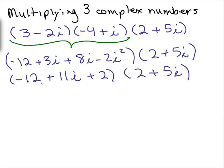And I still need to combine my real parts, the negative 12 plus 2. So I finally have it looking like a complex number in the form a plus bi. So those are the steps for multiplying the first two numbers. 3 minus 2i times negative 4 plus i. All right.